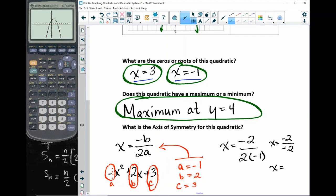So this tells me that x equals negative 2 divided by, 2 times negative 1 is negative 2. x, a negative over a negative is a positive, and 2 divided by 2 is 1. So there is the equation for my axis of symmetry. Well, let's take a look at the graph and see what that looks like.